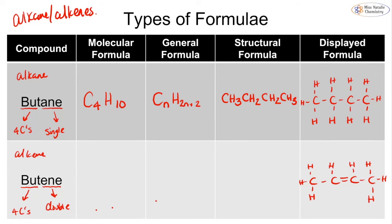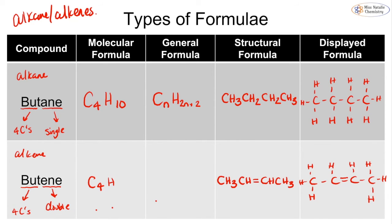The structural formula for butene is CH3, then CH double bond CH, then CH3. For the molecular formula, we still have four carbons; counting the hydrogens gives eight, so C4H8. For the general formula of an alkene, we have n carbons and multiply by two to get the number of hydrogens, giving CnH(2n).